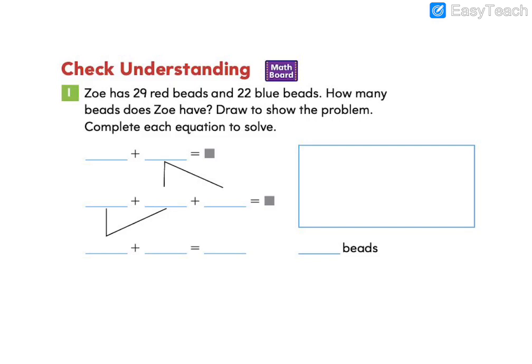Now it's time for you to complete the check understanding. Zoe has 29 red beads and 22 blue beads. How many beads does Zoe have? First, you'll draw the problem here. Showing her number of red beads and her number of blue beads.